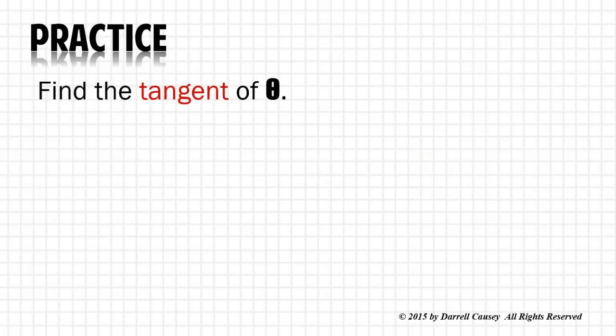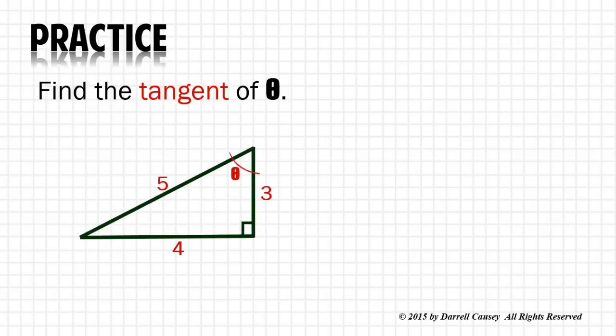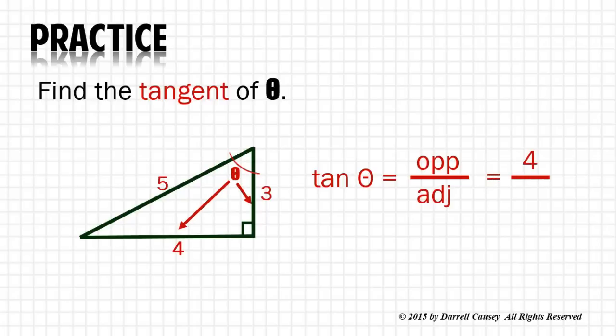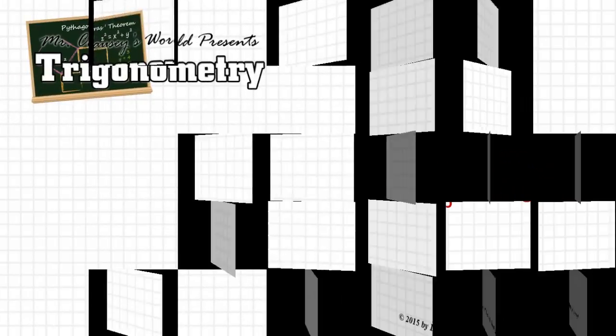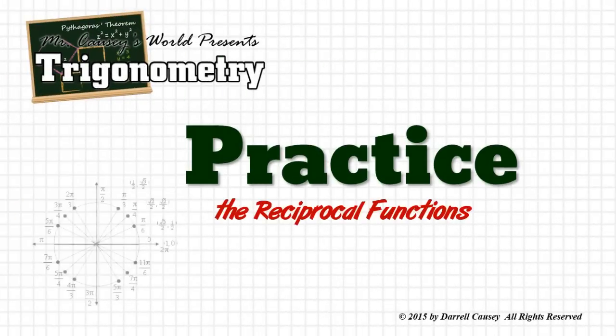And then tangent. The tangent of θ is side opposite over adjacent, which means it's 4 over 3. Notice I chose a different angle this time. Always be on the lookout for that.